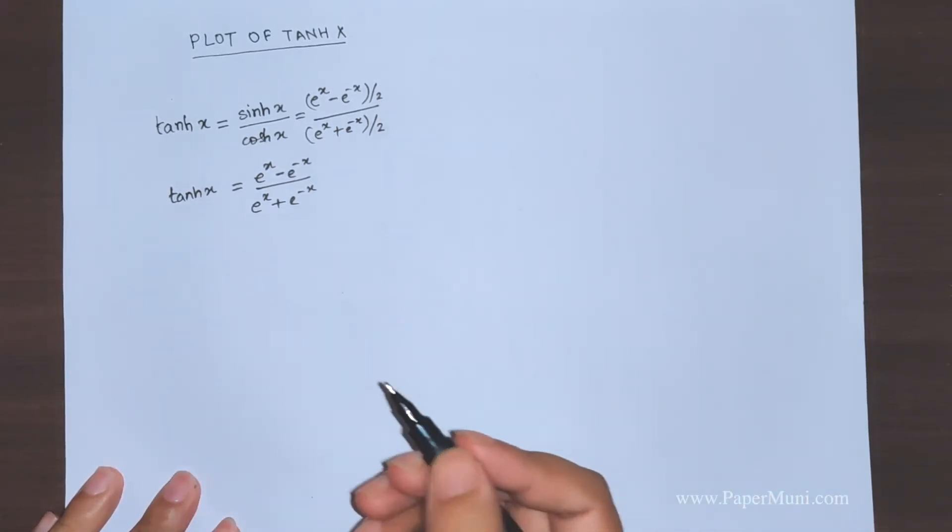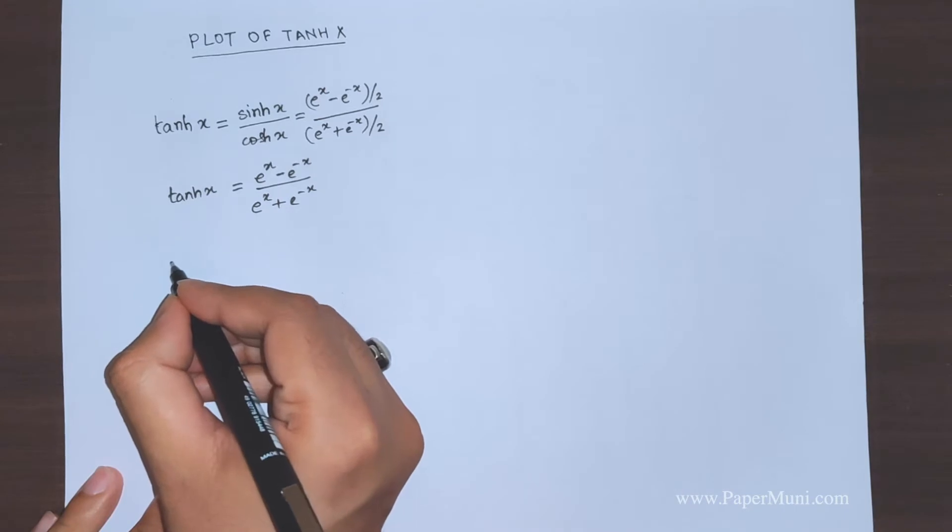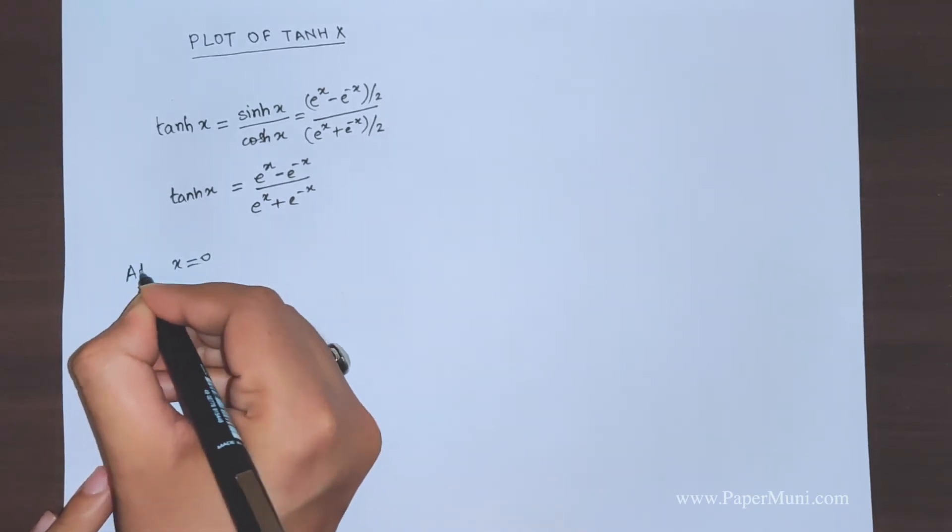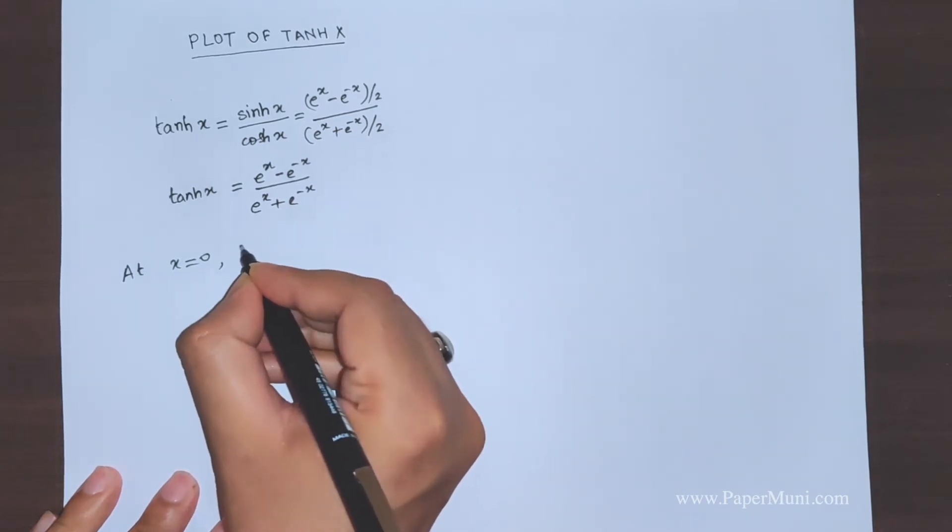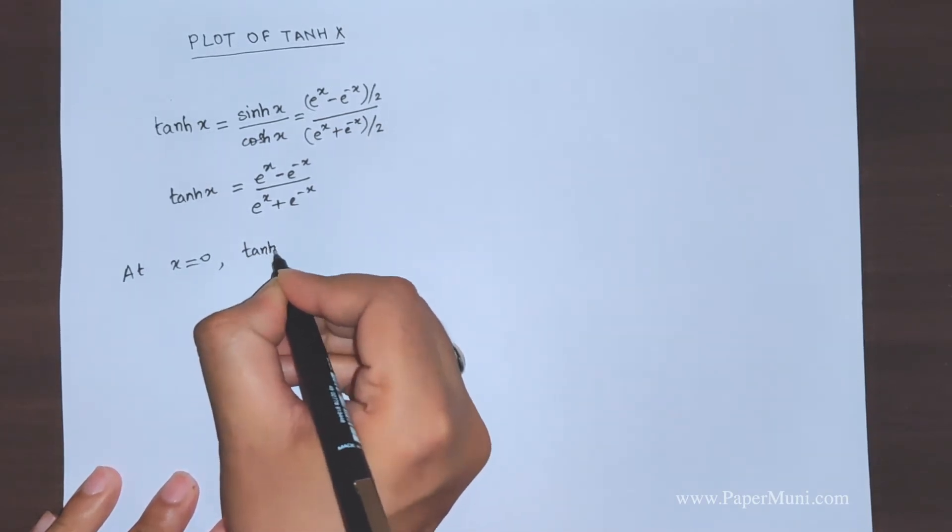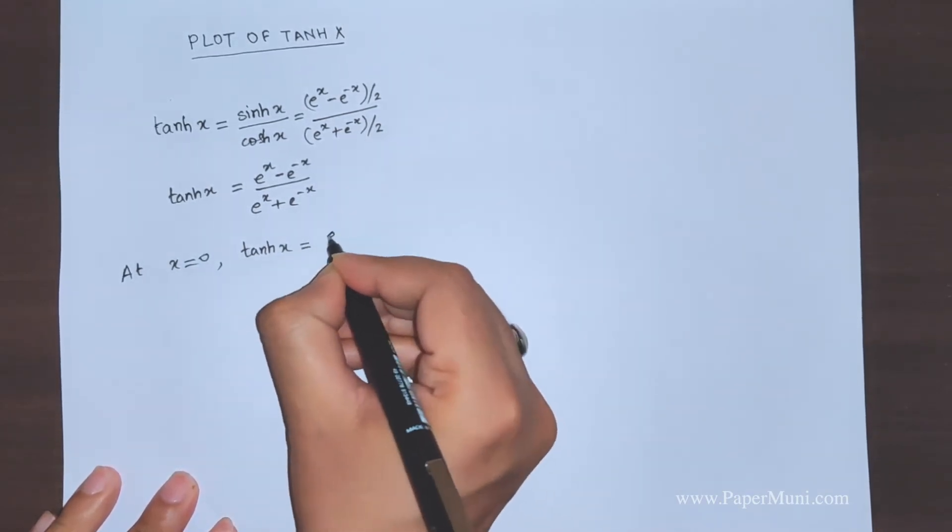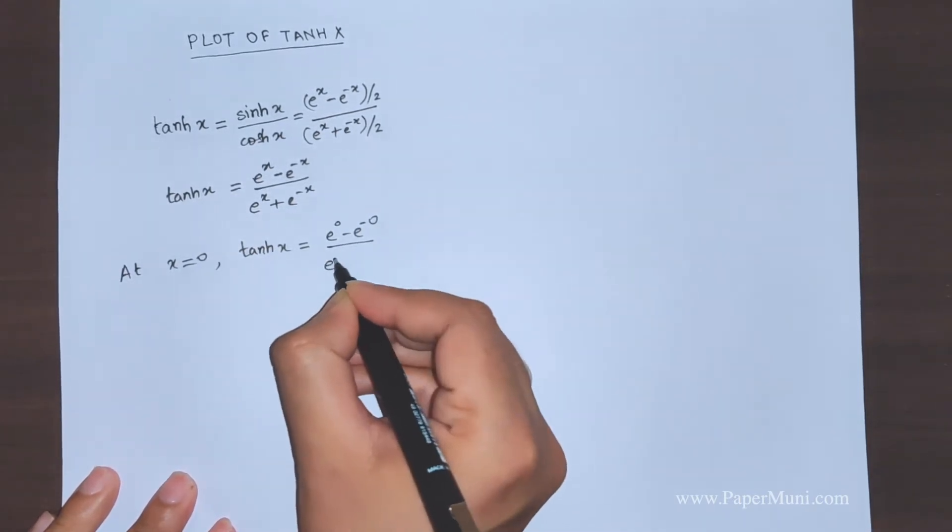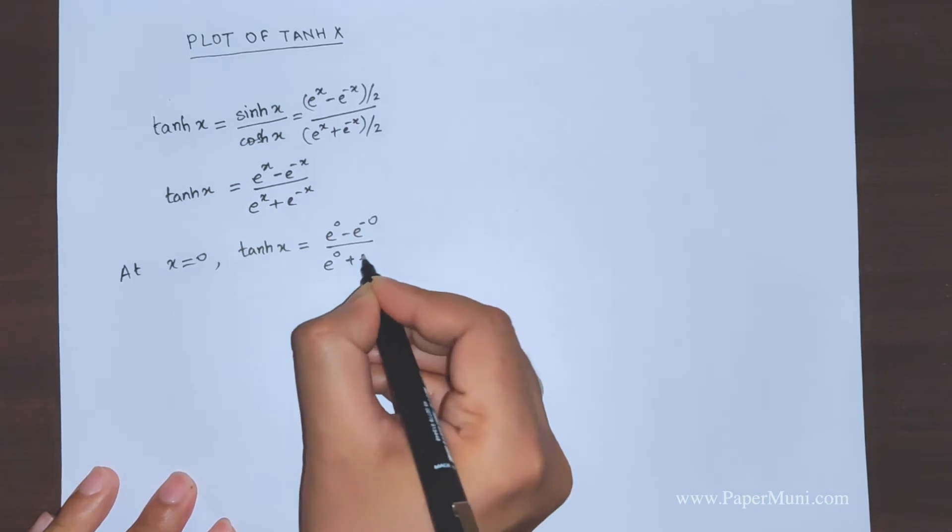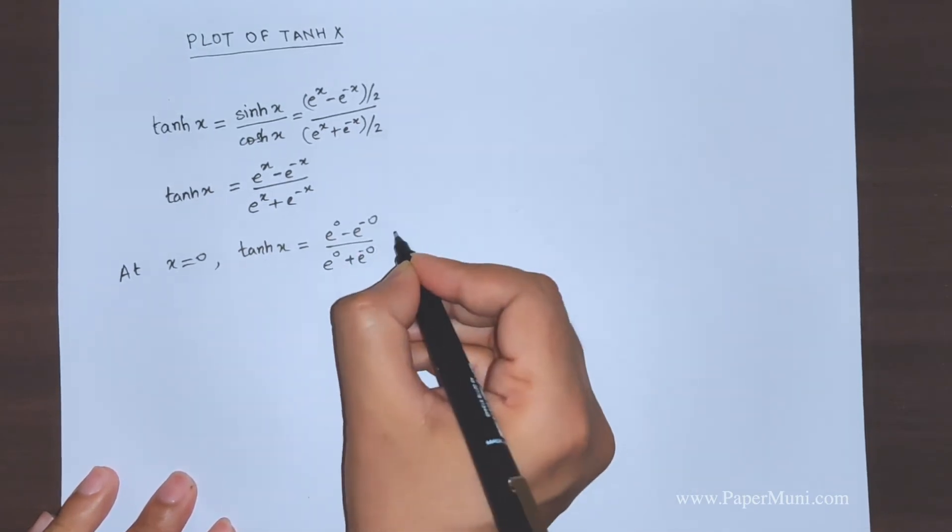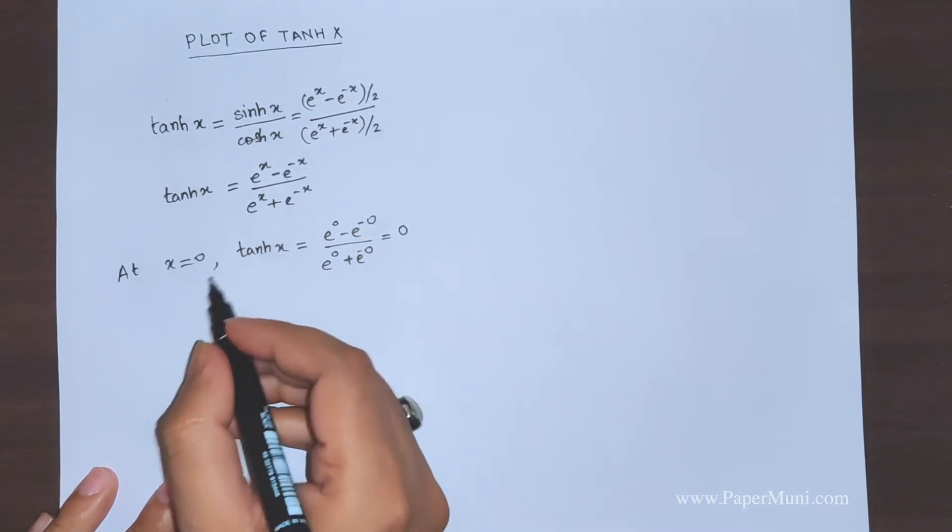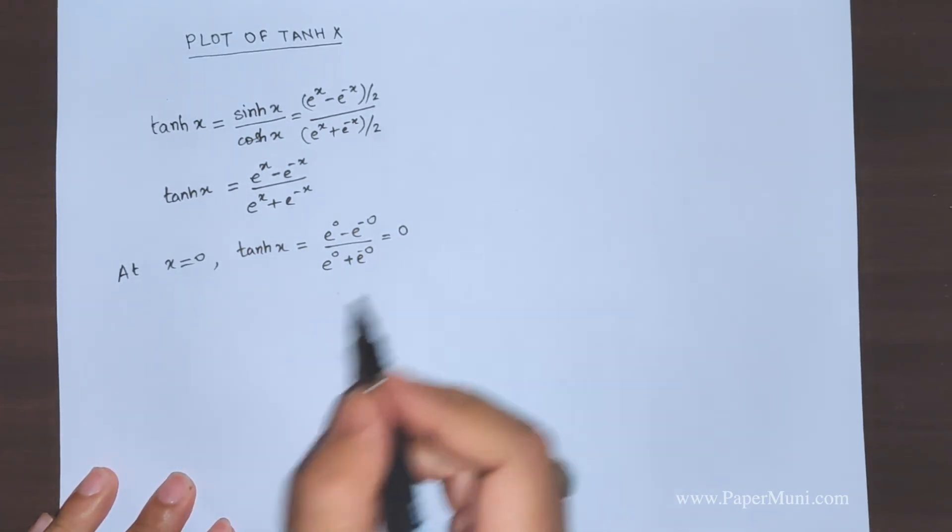Let's look at x equals 0. At x equals 0, tanh x becomes (e^0 - e^0)/(e^0 + e^0), which is (1 - 1)/(1 + 1) = 0/2 = 0. So at x equals 0, tanh x is 0.